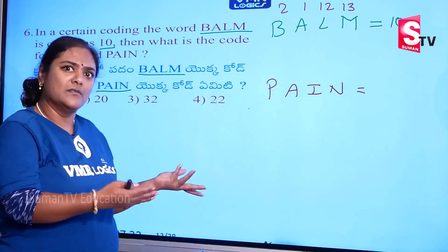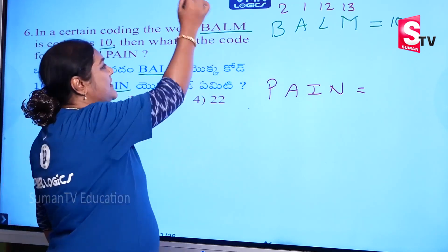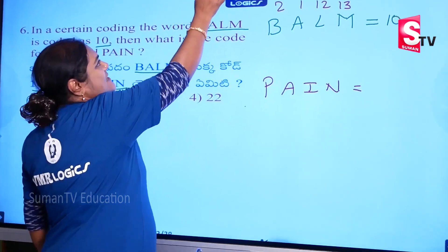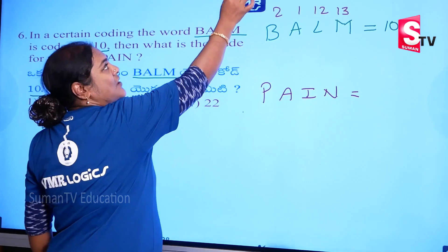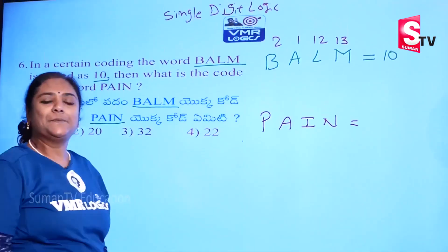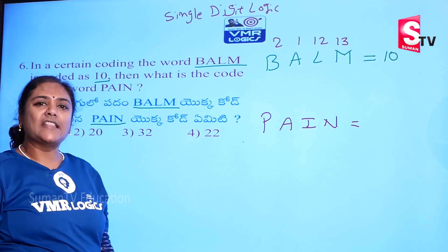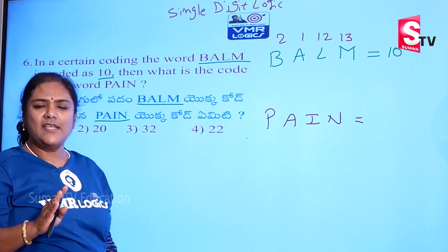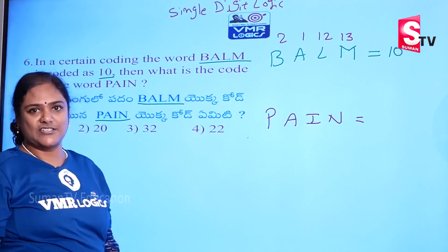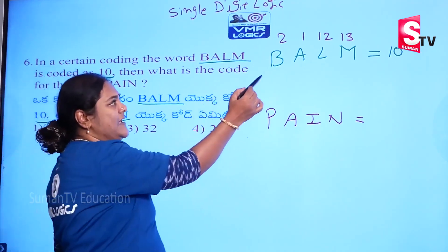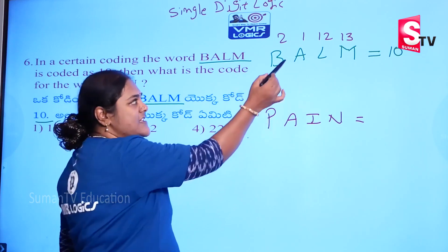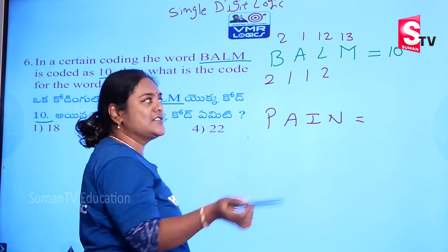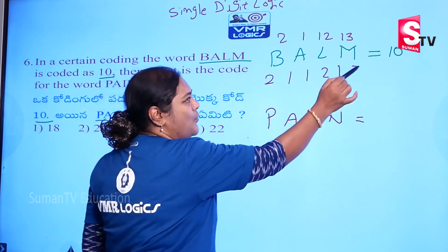This is the name of single-digit logic. Single-digit logic. A1 — okay. 12 is the name of 1+2, and 13 is the name of 1+3.